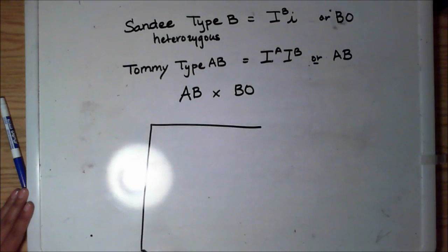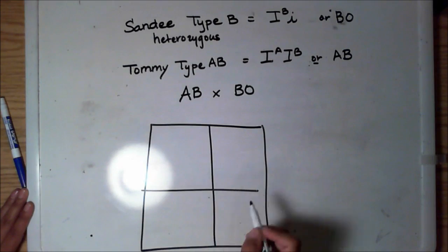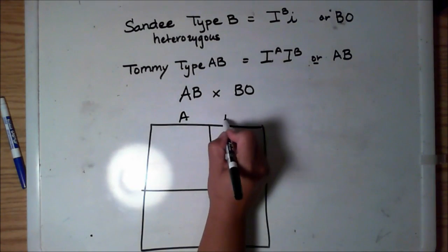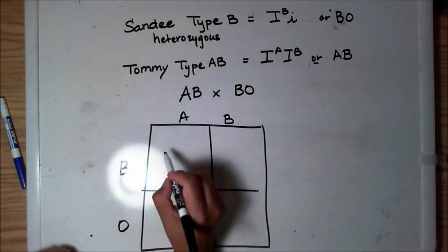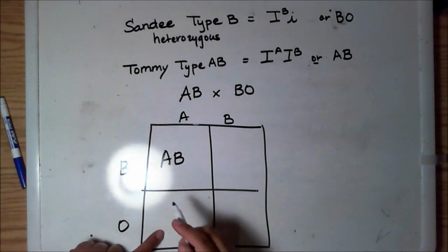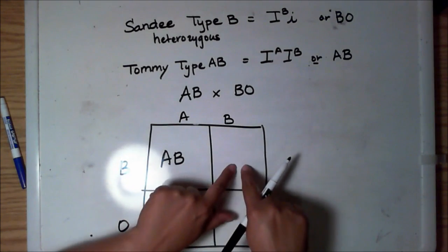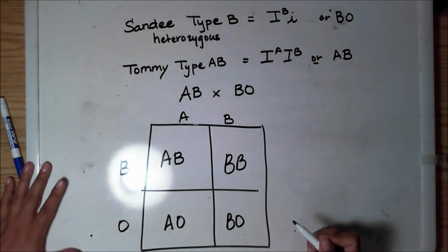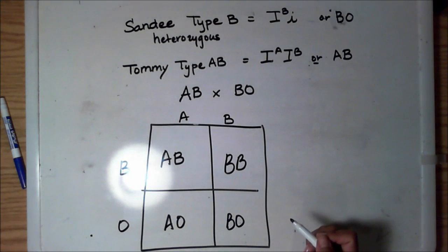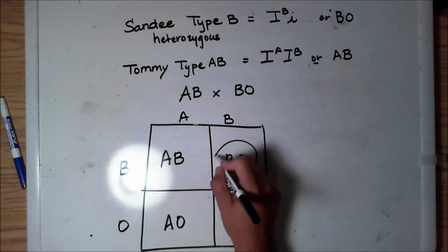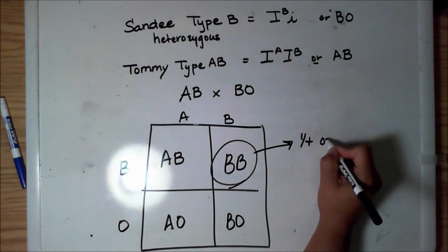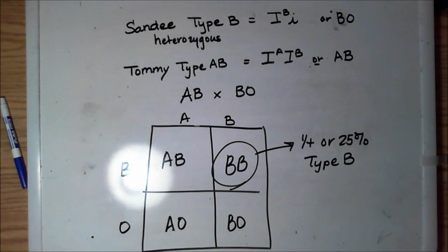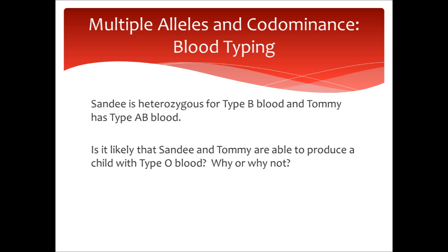The cross between these two individuals — their Punnett square would look like this. We write Tommy's alleles across the top and Sandy's on the side: Tommy's A and B, and Sandy's B and O. Filling in the squares, this indicates all of the possible outcomes from a single mating. Looking at the answers, they can have a type A child, a type AB child, or a type B child. The problem asks for the percentage of a type B child — it's one-fourth, or 25%. The only type B child they would produce would be a heterozygous B.